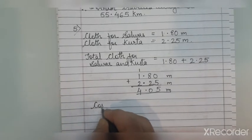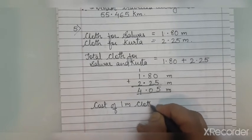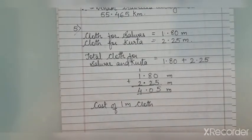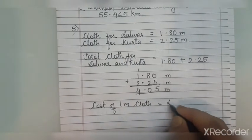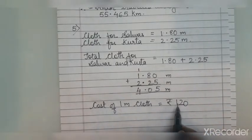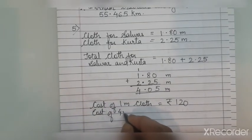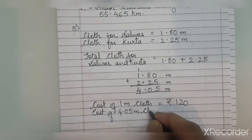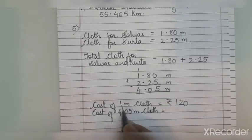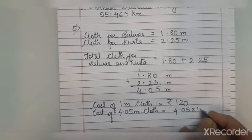Now we write the cost of 1 meter cloth. The per-meter rate was given as rupees 120. For 1 meter the cost is 120, so we need to find the cost of 4.05 meters. As stated, if it is given for 1 and we have to find for many or more, we multiply. So 4.05 multiplied by 120.